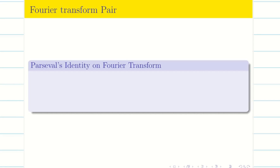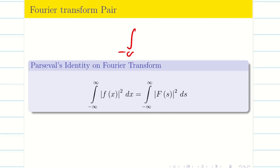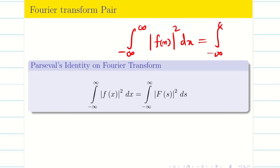Next, Parseval's identity for the Fourier transform. It states that the integral from minus infinity to infinity of |f(x)|² dx equals the integral from minus infinity to infinity of |F(s)|² ds.